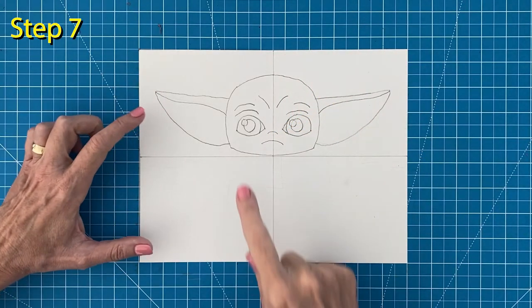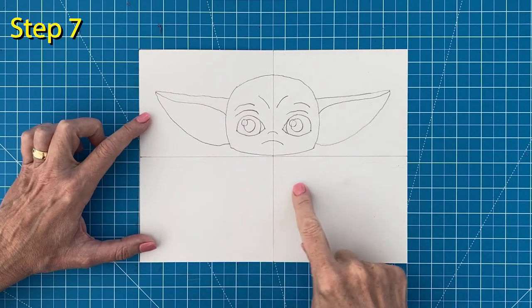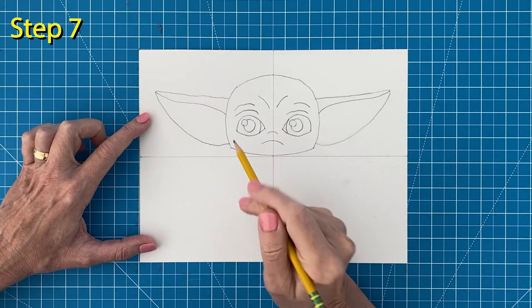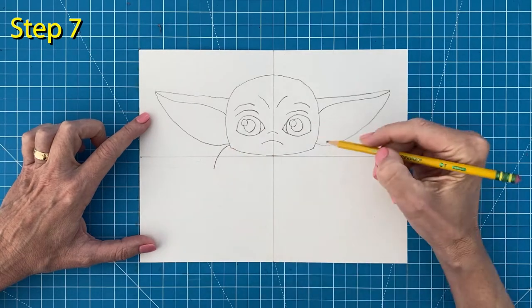Step number seven, draw the collar below the head. Then add the body of the robe below it.